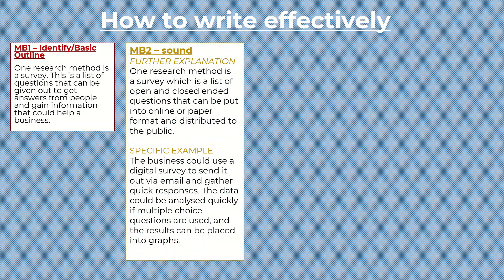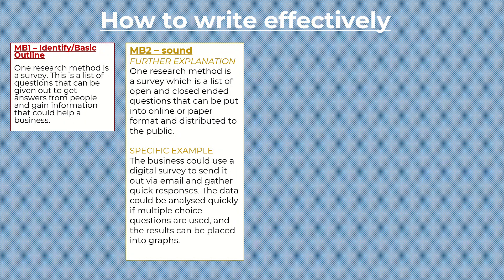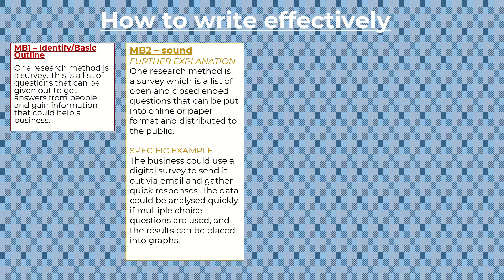For mark band two, we need a further explanation with a specific example. 'One research method is a survey, which is a list of open and closed-ended questions that can be put into online or paper format and distributed to the public.' Then a specific example: 'The business could use a digital survey to send out via email and gather quick responses. The data could be analyzed quickly if multiple choice questions are used, and results can be placed into graphs.' That last part is a slight further addition to include a benefit of using that method.